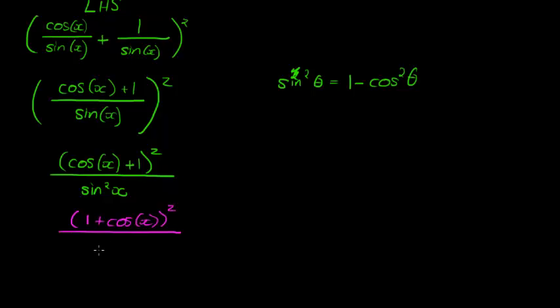1 plus cos x and cos x plus 1 is the same thing, squared. In the denominator, however, I am changing that to 1 minus cos squared x.